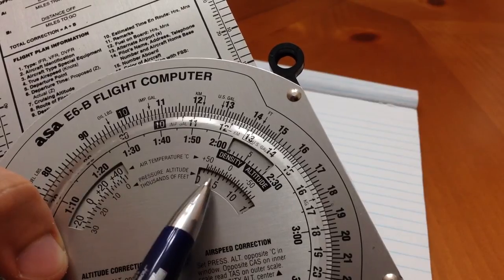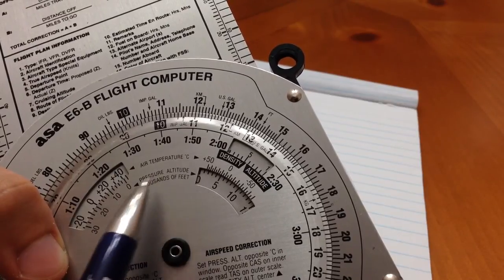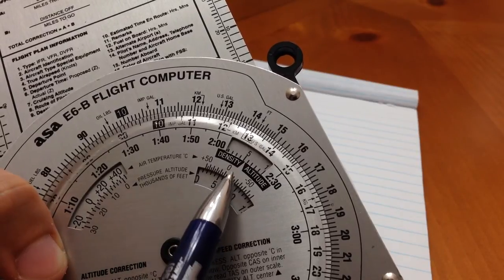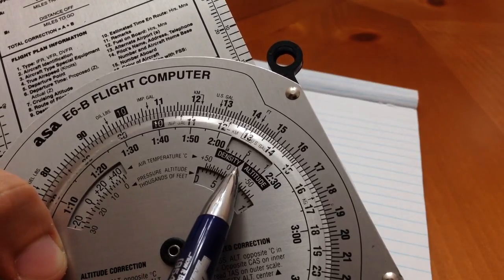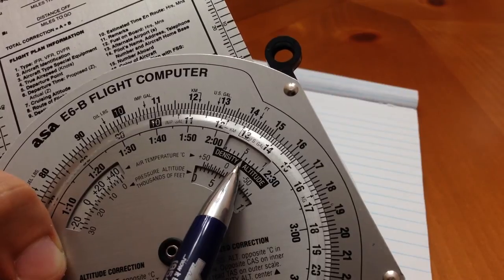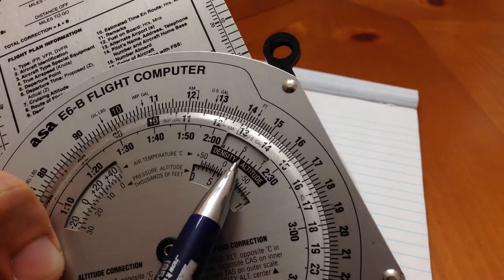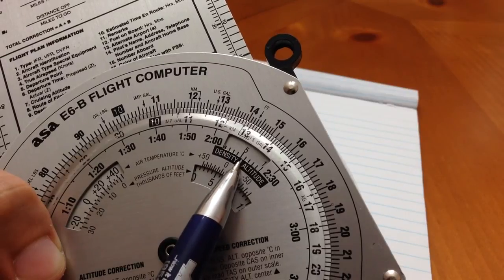For a temperature of 45 degrees and a pressure altitude of 2,000 feet the density altitude is about 5,500 to 6,000. It's very hard to tell exactly what it is. My best guess would be 5,800.